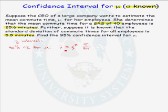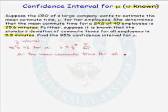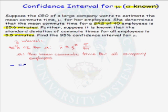Let's define some of these parameters. Mu is the mean commute time for all company employees. Before we construct the confidence interval, let's check the conditions and assumptions that must be met. First, we must have a simple random sample. We do — the problem states we have a simple random sample, so that condition is met.